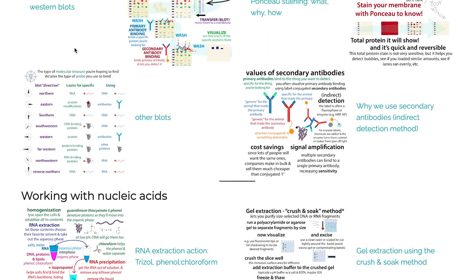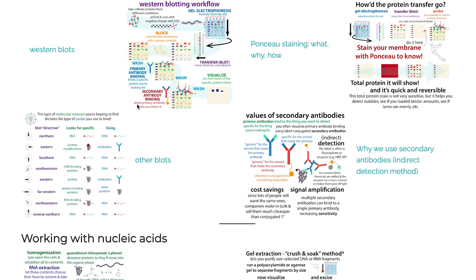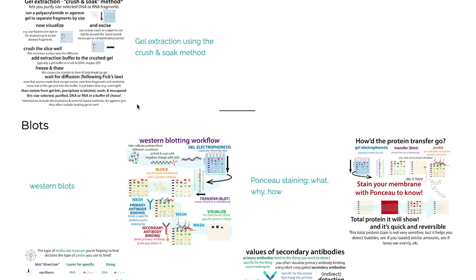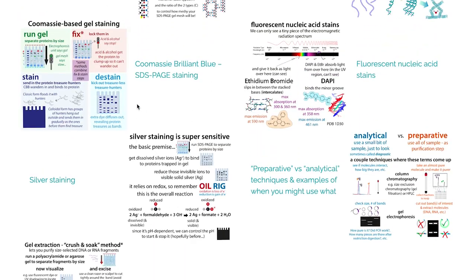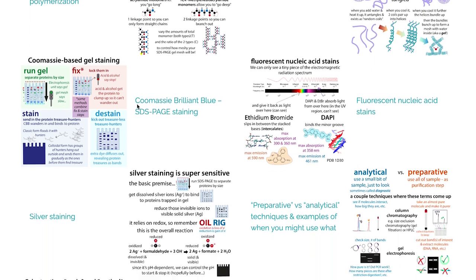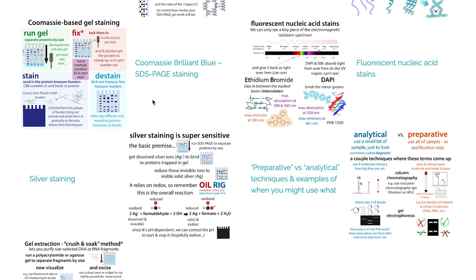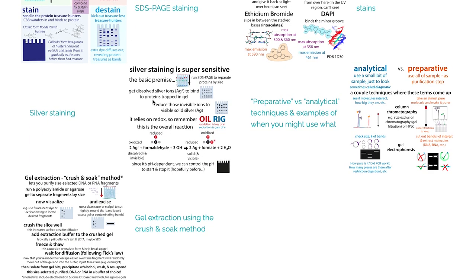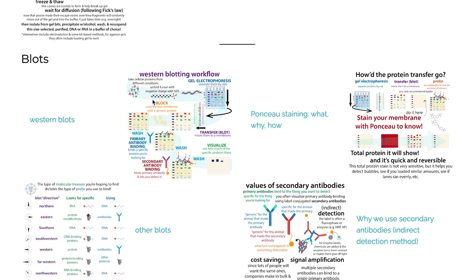So remember: a blot is going to show you specific things, but only if you're looking for them. A general overall total molecule stain is going to show you everything, but won't identify what it is.